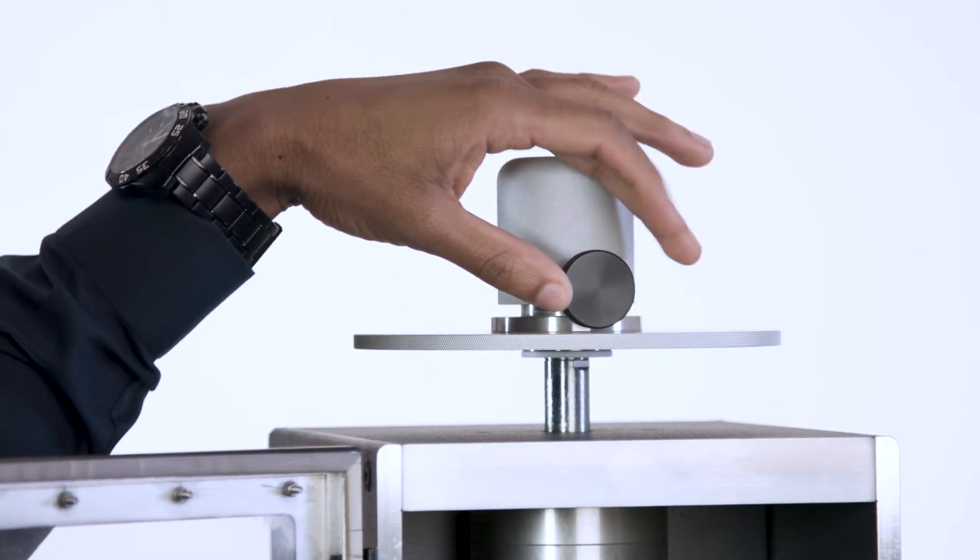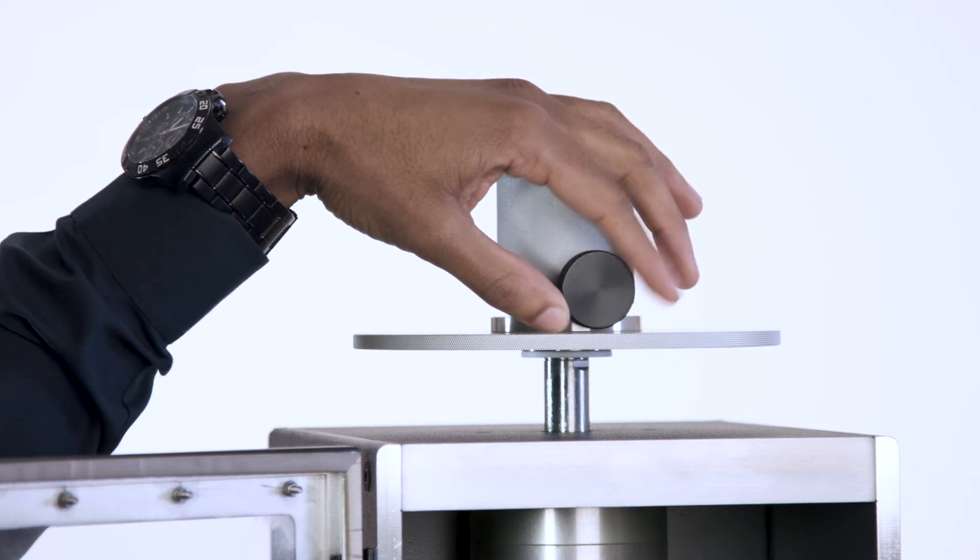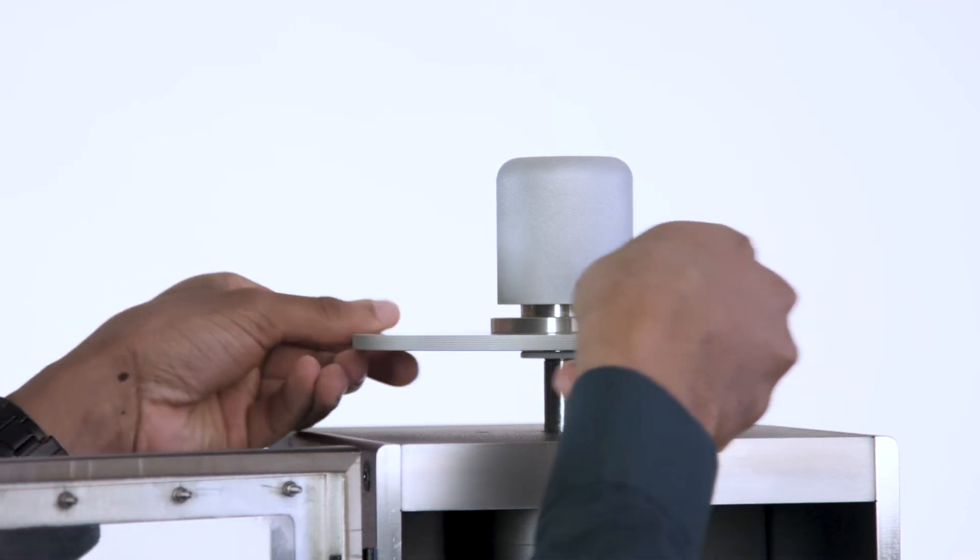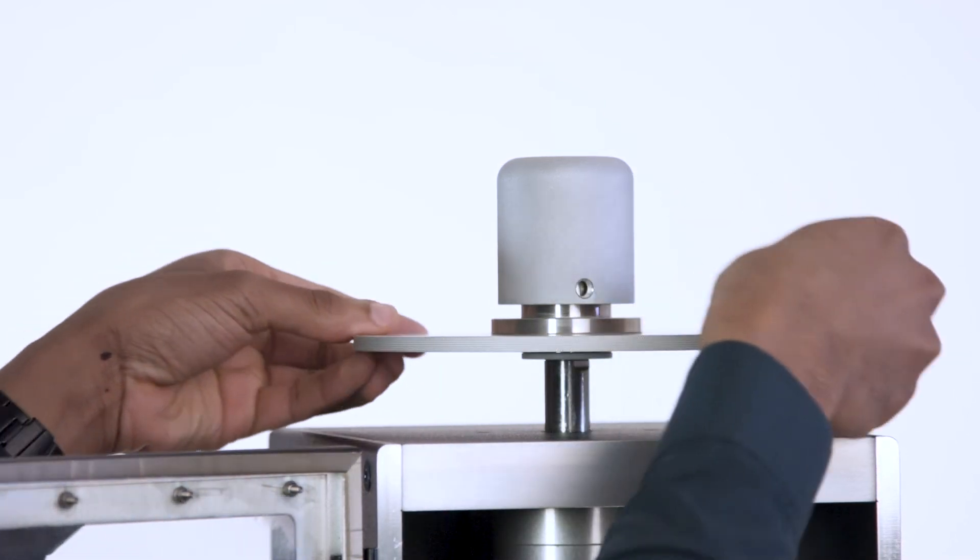To create this space, first turn the knob counterclockwise to unlock the topper. With it now unlocked, rotate the disc to the left until the appropriate position is achieved.